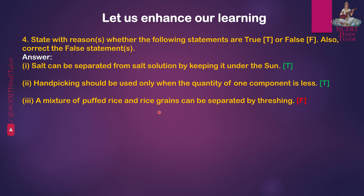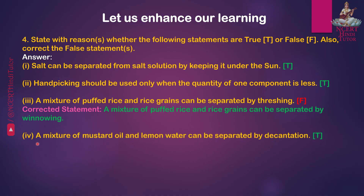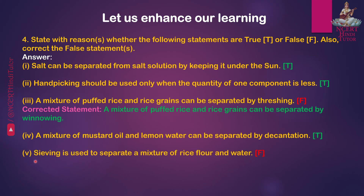Third — A mixture of puffed rice and rice grains can be separated by threshing. Answer: False. Corrected statement: A mixture of puffed rice and rice grains can be separated by winnowing. Fourth — A mixture of mustard oil and lemon water can be separated by decantation. Answer: True.